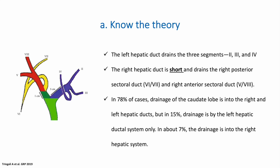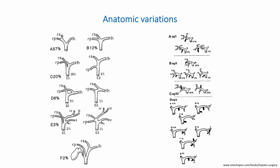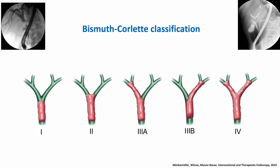I'll show you some examples about knowledge, quickly going through anatomy. It's important that you know how the bile duct is essentially constructed — that the right hepatic duct branch is shorter and the left one is a little larger. You need to know the anatomic variations, and don't be surprised during a procedure when you are seeing a strange configuration of the bile duct.